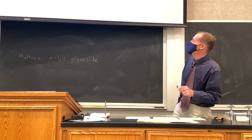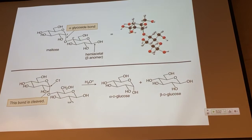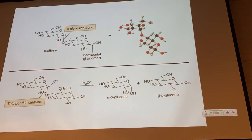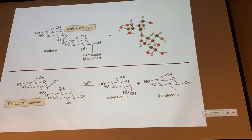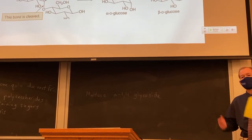On the screen we have a sample disaccharide — this is maltose. Maltose is a component of barley; it can also be formed by hydrolysis of starch. Malt is the name given to the liquid derived from barley, and maltose is a major component of that. Our monosaccharides are linked together by a glycoside bond to form a disaccharide, and this is an alpha glycoside.